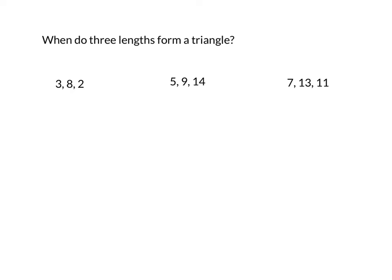Let's see how to tell when three lengths indeed form a triangle. So the way to do that is to take your three lengths, for example here 3, 8, and 2, and to reorganize them from smallest to largest. So I'm going to go ahead and rewrite them as 2, 3, and 8.